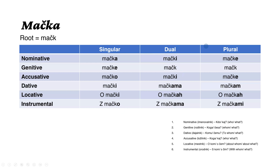We do the same for singular, dual, and plural. In dual, of course, we have two cats. So 'Kdo ali kaj je? Mački.' Who or what is? Two cats. 'Koga ali česa ni? Mačk.' 'Koga ali kaj vidim? Mački.' 'Komu ali čemu dam? Mačkama.' 'O kom ali o čem? Govorim o mačkah.' 'Z kom ali z čim? Grem z mačkama.' And for plural, we have three or more cats.